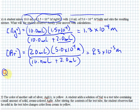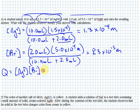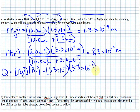Now we calculate Q — the reaction quotient. We use the equilibrium expression when we're not sure if the system is at equilibrium. Q equals [Ag⁺][Br⁻], which equals 1.3×10⁻⁴ times 8.3×10⁻⁵, and that equals 1.0×10⁻⁸.